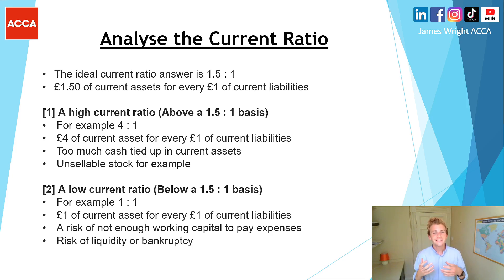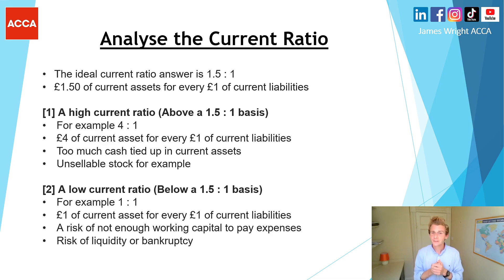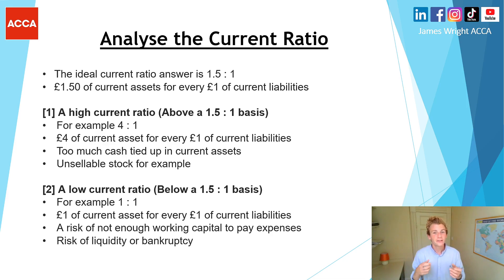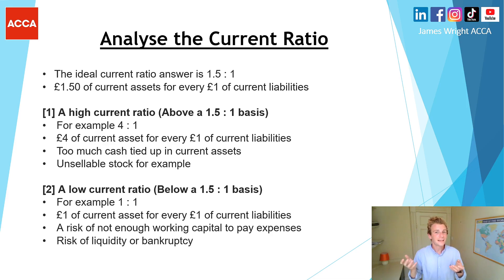We were looking for an ideal current ratio of 1.5 to 1, meaning £1.50 of current assets to £1 of current liabilities. Our working example gives 2 to 1, which is a higher current ratio. If you had an answer of, say, 4 to 1, that could imply too much cash tied up within current assets — too many current assets relative to what's needed. It could also mean unsellable stock or growing trade receivables balances that may not be collected.